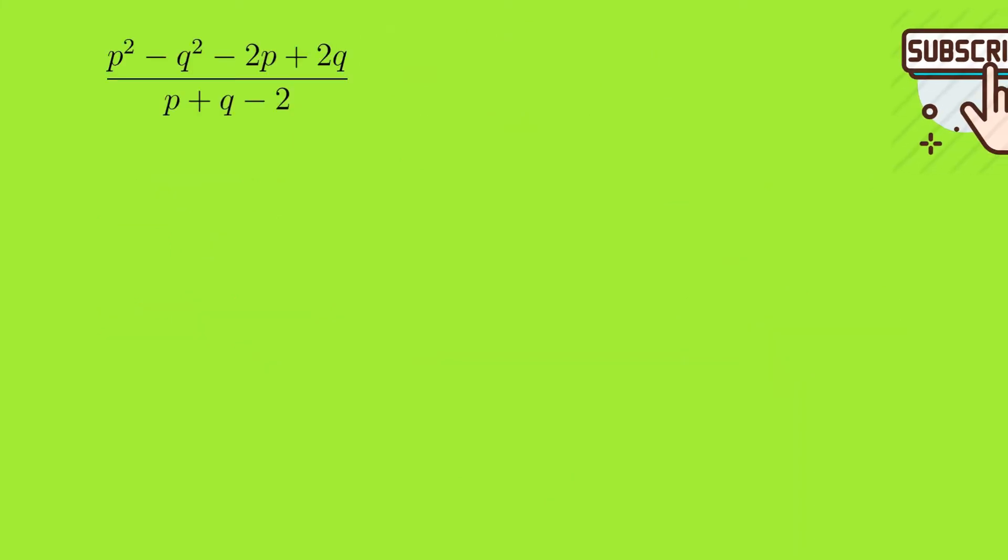Here we have p squared minus q squared minus 2p plus 2q, divided by p plus q minus 2. We need to see in which way we can factorize so that we get at least one factor in the numerator that corresponds to the denominator.